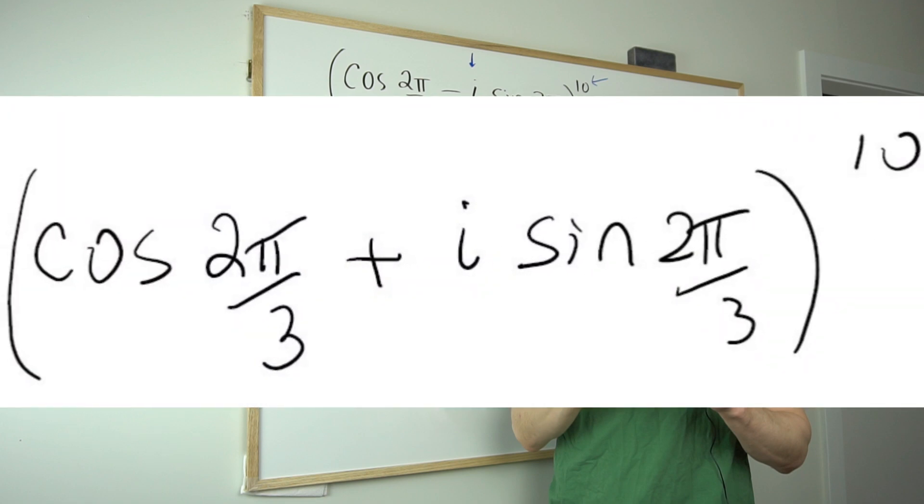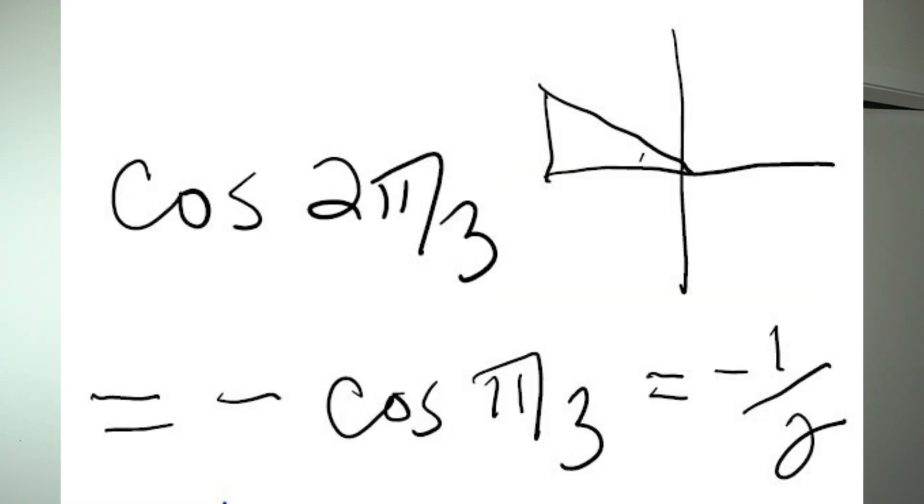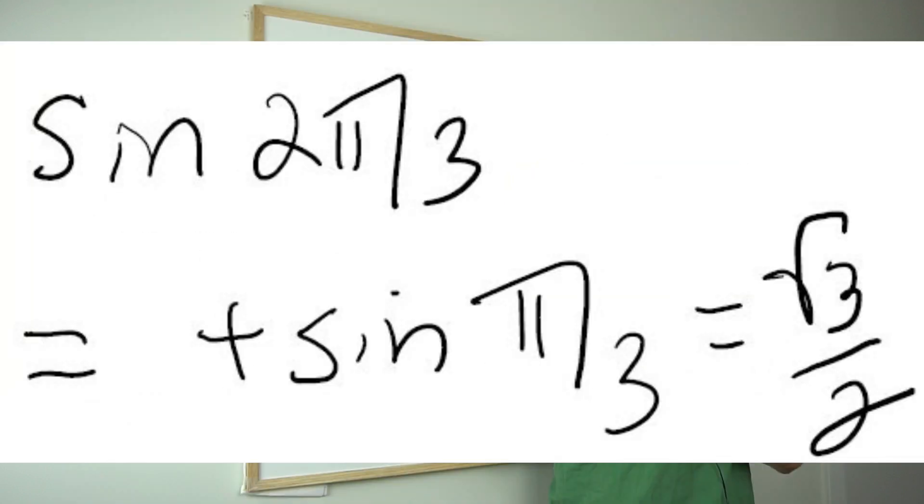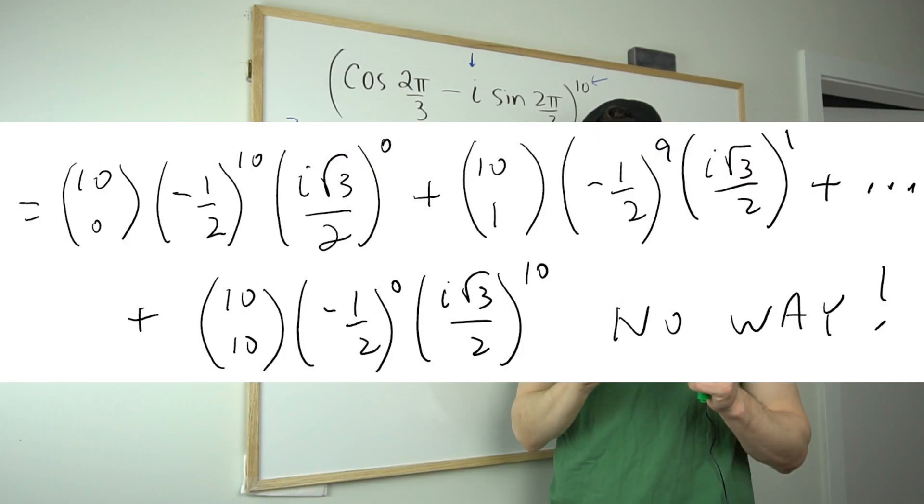Because look at this, this is a binomial expansion problem. The exponent is 10. So one thing you could do is you could evaluate both cos and sine at 2π over 3 and get them as ordinary numbers. But then you're going to have to expand it out either by using the distributive property or you could use the binomial theorem. Most of you know what that is. So we need an alternative to this.